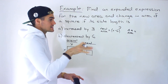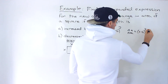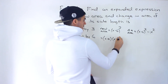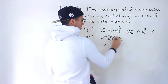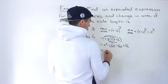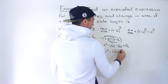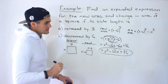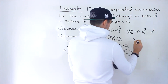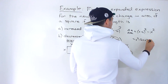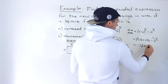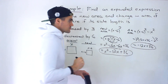The new area is (x − 6) squared, and the change in area is (x − 6) squared minus the original area x squared. Expanding (x − 6)(x − 6): we get x squared, then negative 6x, negative 6x, and positive 36. Those like terms combine to give x squared minus 12x plus 36. Subtracting the original x squared, the x squareds cancel out, leaving negative 12x + 36 as the expression for the change in area.